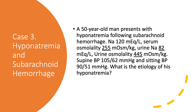Case number three: hyponatremia and subarachnoid hemorrhage. Here we have a 50-year-old man presenting with hyponatremia following subarachnoid hemorrhage. Sodium is 120, serum osmolality is 255, urine sodium is 82, urine osmolality is 445. Blood pressure supine is 105/62, while sitting is 90/51. What is the etiology of hyponatremia?